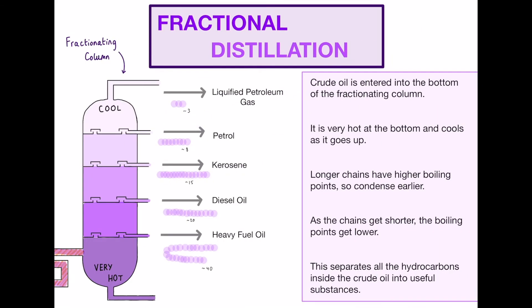Next, we have fractional distillation. All of these hydrocarbons we're talking about naturally do not come separated out in nature — they all come from crude oil, which are effectively the oils found from things like fossil fuels that have formed in the Earth for millions of years. Because of that, there are mixtures of all types of alkanes, alkenes, and other things within those.